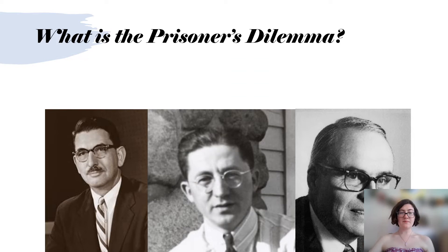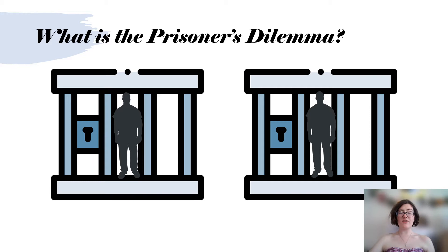The story is this: two men commit a felony together and are both convicted. They are both given an offer independently. If they throw their partner under the bus, they can walk out a free man, but their partner will get three years in prison. If they both tell on each other, they both get two years in prison. If they both stay silent, they each only get one year in prison.